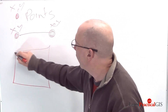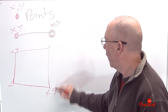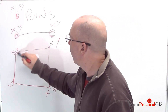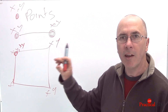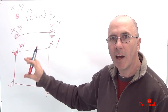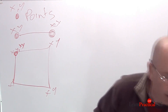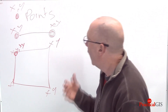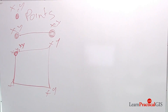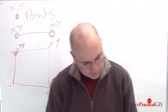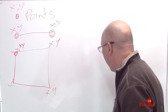And we have polygons, which are a series of XY coordinates joined such that the start XY and end XY — the start coordinates and end coordinates — are identical to each other, and they need to be defined as being a polygon within the system.